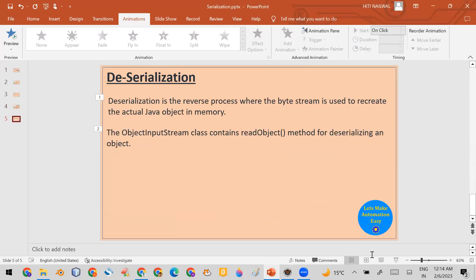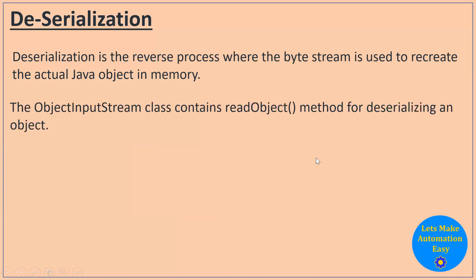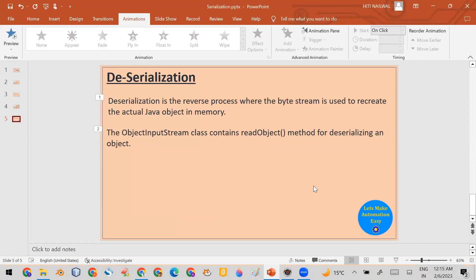Let me summarize deserialization. Deserialization is the reverse process where the byte stream is used to recreate the actual Java object in memory. In short, when you convert the byte stream back into a Java object, this is called deserialization. To achieve this, you need the readObject method which is available in ObjectInputStream. That covers serialization and deserialization. If you liked the video, please click the like button, leave comments, and subscribe to the channel. The code will be copied in the description.